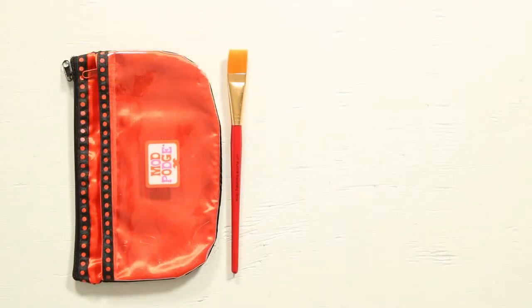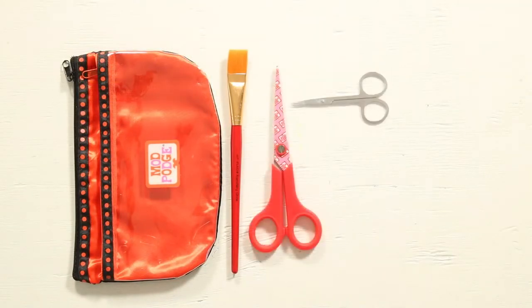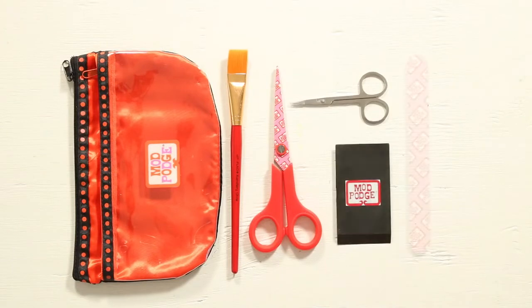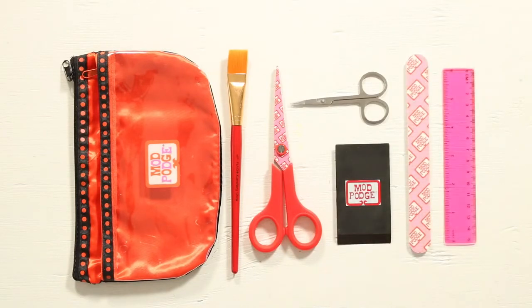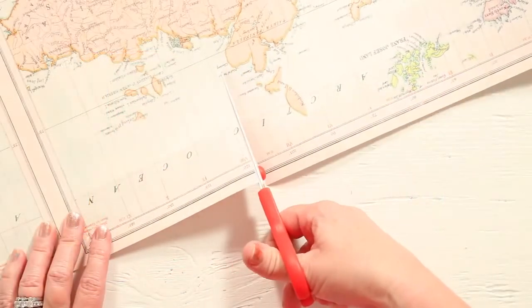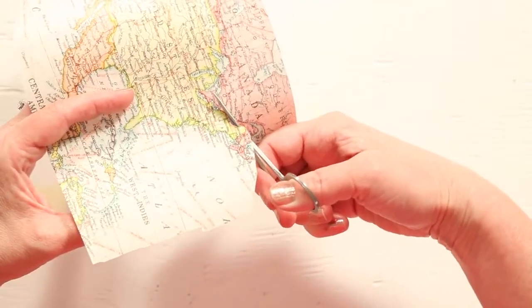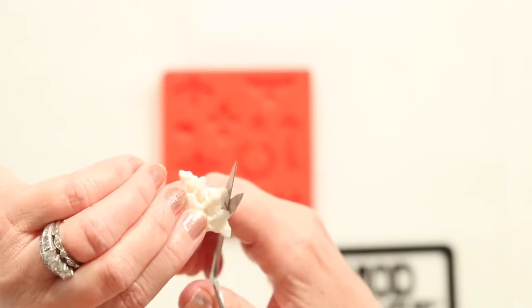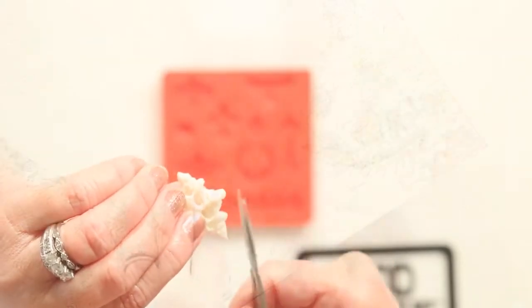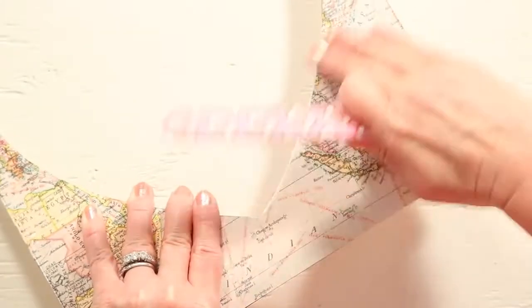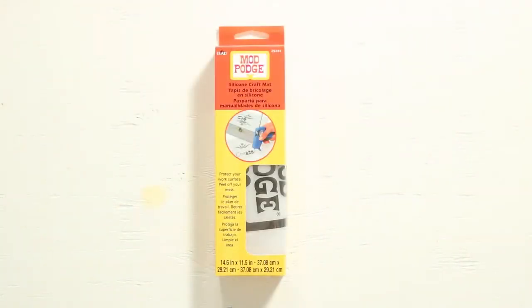The 7 piece tool set features Mod Podge basics all in a pouch. This is great for retreats and crafts on the go. The large scissors are great for long even cuts. The small scissors are great for detail cuts and trimming Mod Melts. I really love the emery board. I use it to create distressed edges.